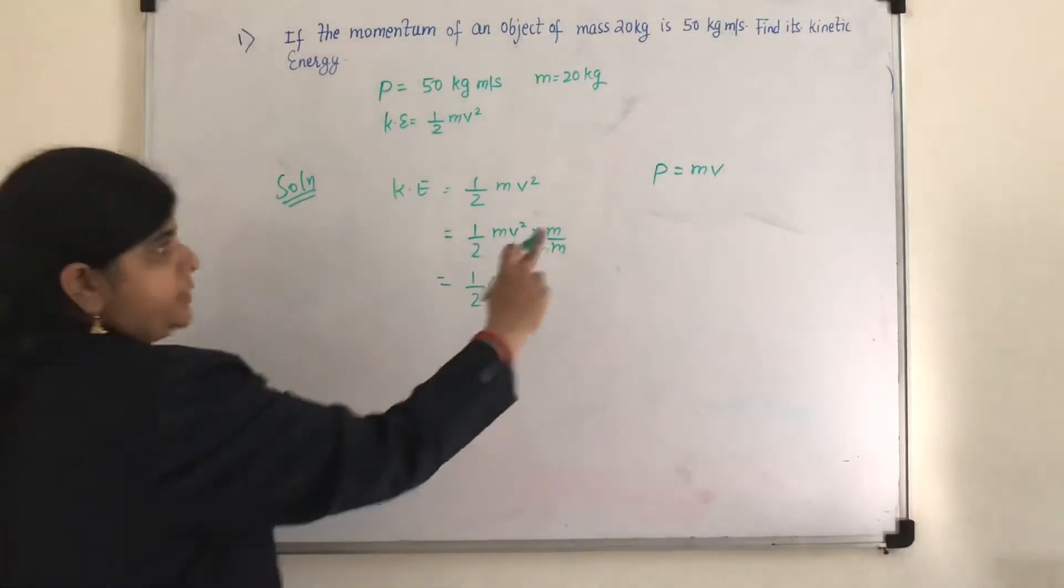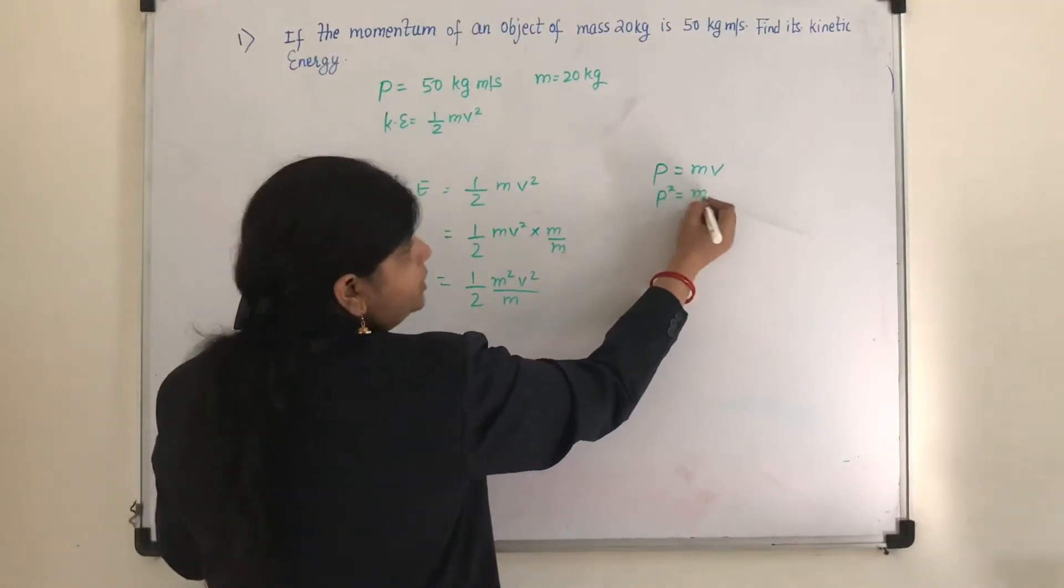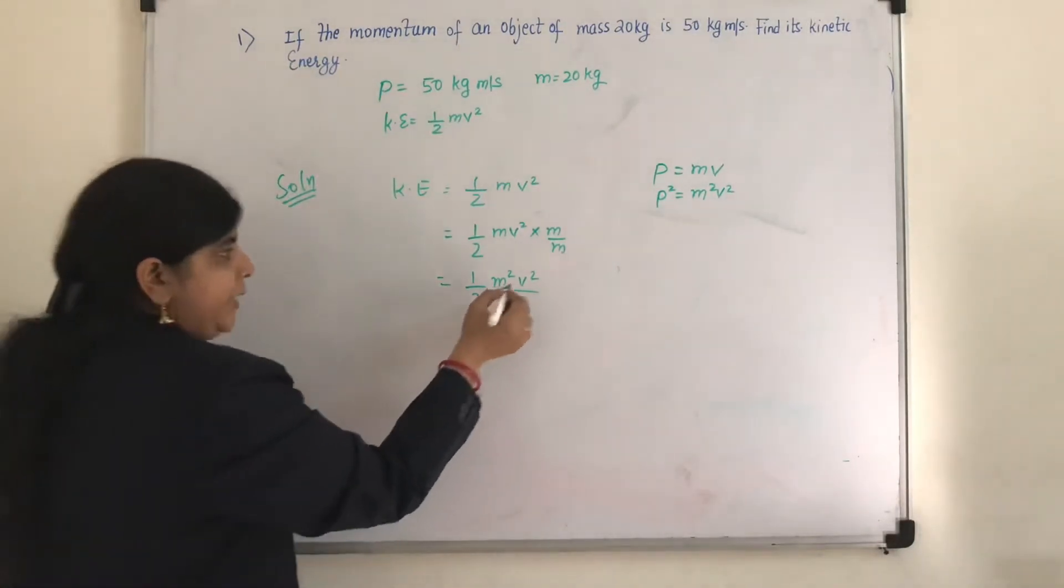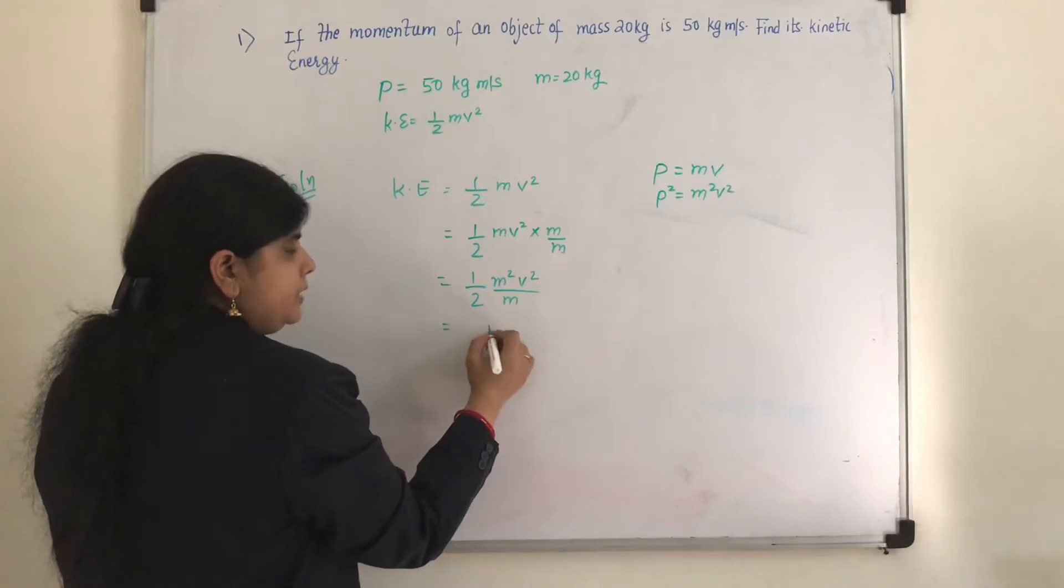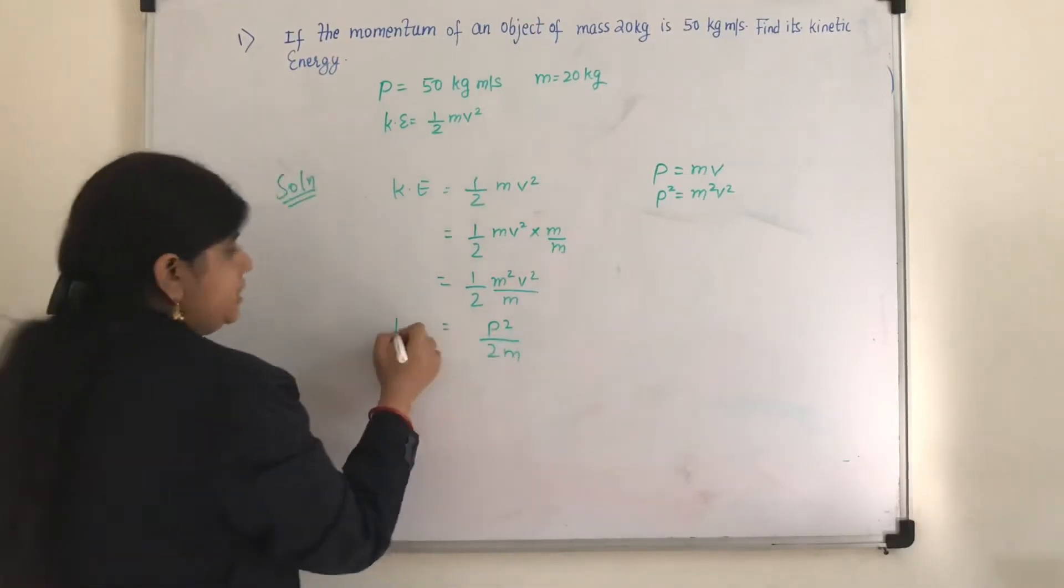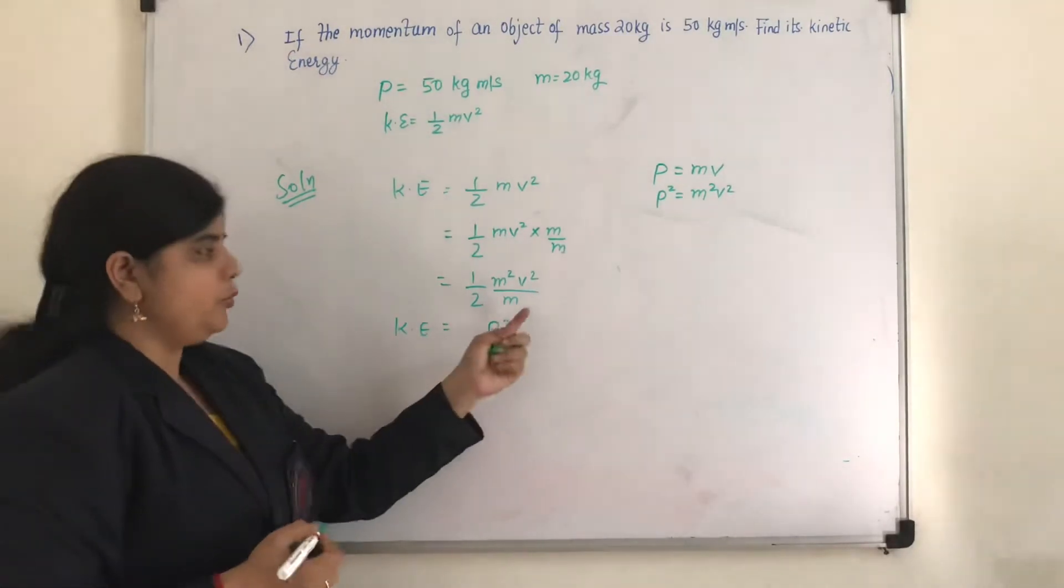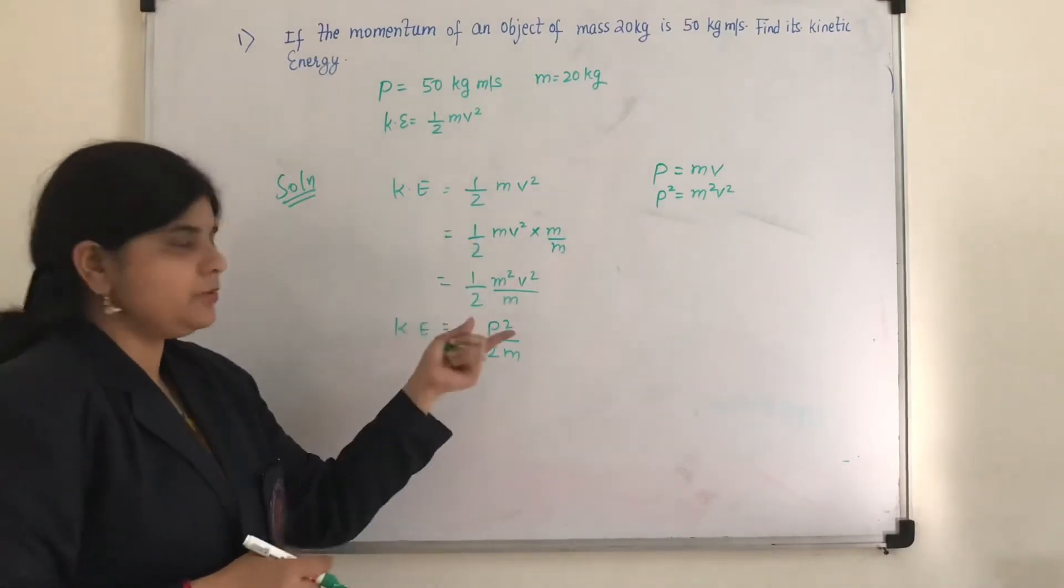Now if I just make it square, this will become P square is equal to m square v square. So instead of m square v square I can write P square divided by 2m. So this is the formula for kinetic energy when momentum and mass is given.